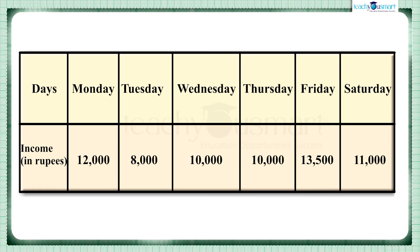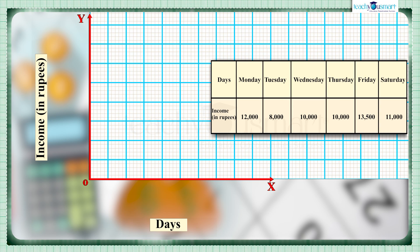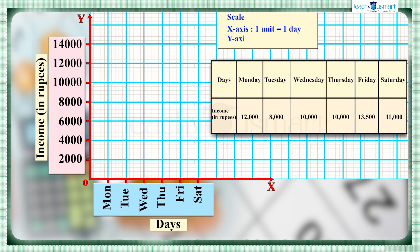Let's draw a graph of this data. In order to represent the given data graphically, first we draw x and y-axis. We take days on x-axis and income on y-axis. Let's assume that one unit on x-axis represents one day. One unit on y-axis represents rupees 2,000, which is the scale taken for this graph.